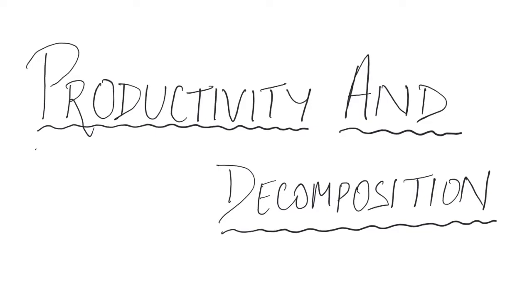Hey guys, welcome back to One Stop Biology. In today's video we are going to start off with productivity and decomposition. We have reached chapter 40 of class 12, which is ecosystem. In the last video we saw the structure of ecosystem, its definition, functions, and components. The first two components of ecosystem are productivity and decomposition.